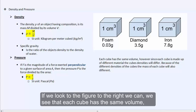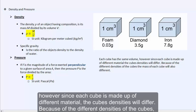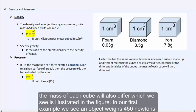Looking at the figure to the right, we see that each cube has the same volume. However, since each cube is made up of different material, the cubes' densities will differ. Because of the different densities of the cubes, the mass of each cube will also differ, which is illustrated in the figure.